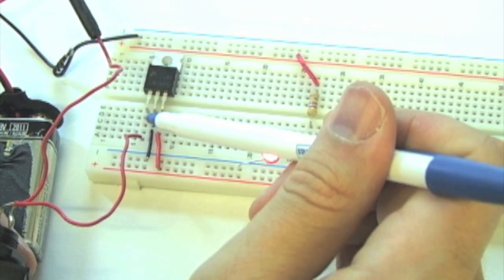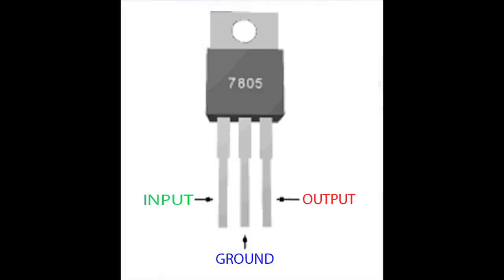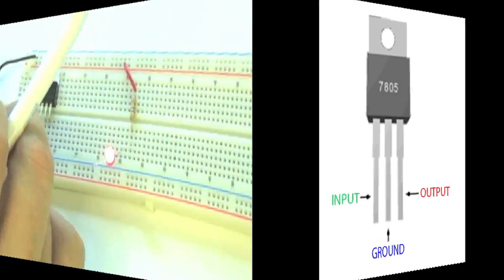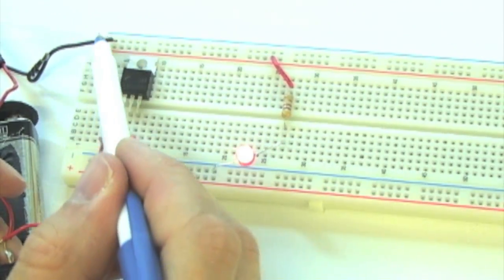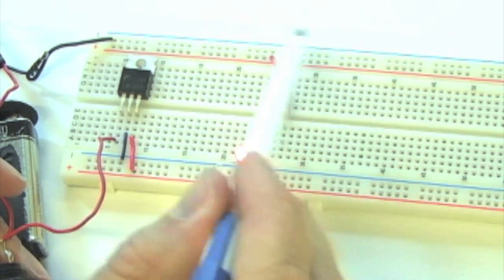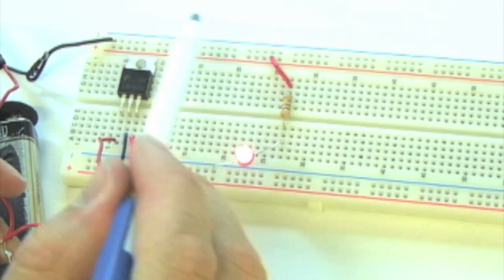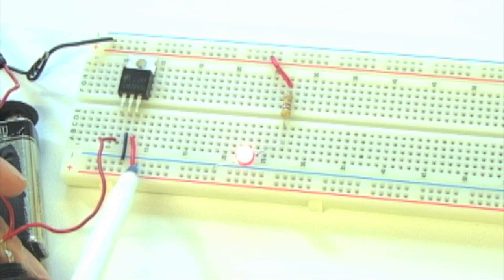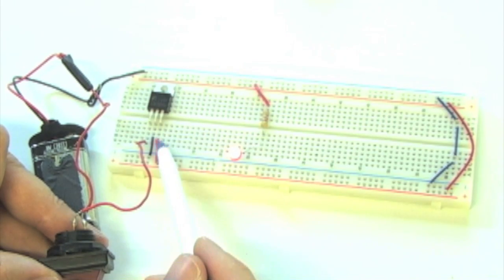Here is the pinout of the 7805 voltage regulator. Because the ground lead of our battery is connected to the ground rail, and our ground rails are continuous throughout the breadboard, the middle pin of the 7805 is connected to the same ground as the battery.